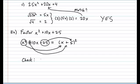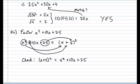Let's verify by going forward: (x + 5)² using the identity gives x² — don't forget the middle term — 5 × x × 2 = +10x, and then +25. Sure enough, we got back our original question.